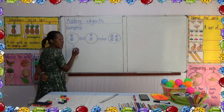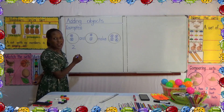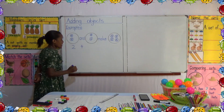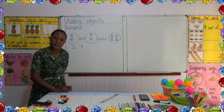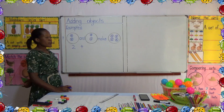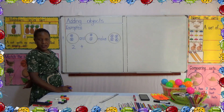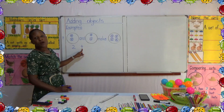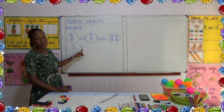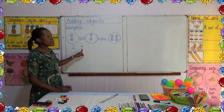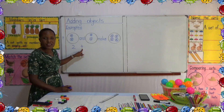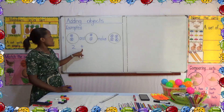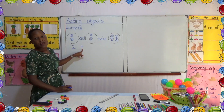It is called an addition sign, and this is how it looks like — it's like a cross. But it tells us to add objects. It is the addition sign. We call it the addition sign.